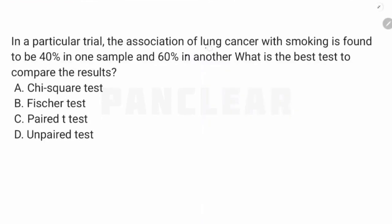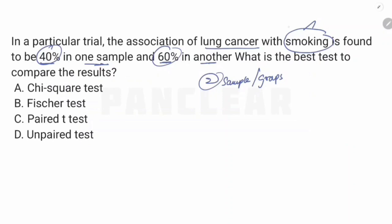In a particular trial, the association of lung cancer with smoking is found to be 40% in one sample and 60% in another sample. We have percentages — that means proportions — being compared between two sample groups. This is a non-parametric test. The options t-test and paired t-test are parametric and eliminated. The answer is chi-square test. Note: Fischer's exact test is used when group size is less than 5 (small population), but the answer here is chi-square test.